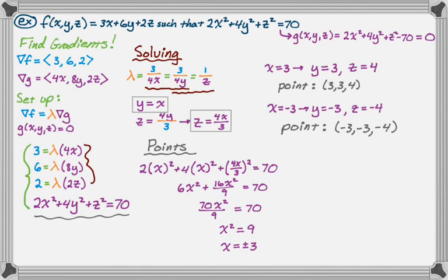Now we're just going to test those in the function. I think one of them is going to give me the maximum and one will give me the minimum value of the function given the constraint. So f of 3, 3, 4 is: 3 times 3 is 9, 6 times 3 is 18, 4 times 2 is 8. Add those up, we get 35.